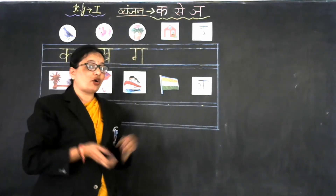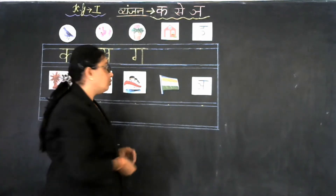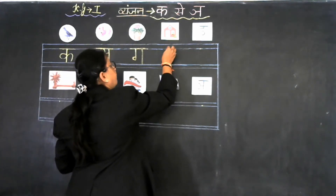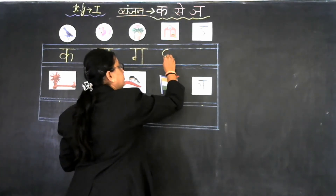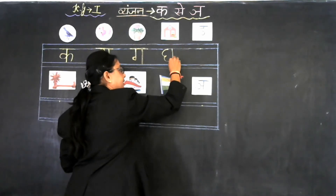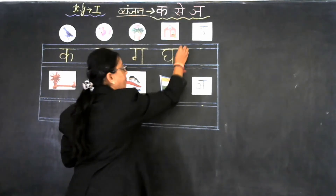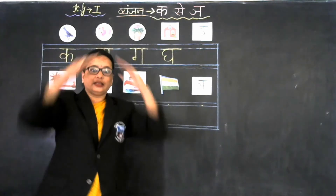And what is the formation of Vyanjan Gha? Now look at the board. First of all we draw reverse 3 like this, go up, and make the standing line like this, and sleeping line on the top like this. Ghar se ghar, ghar se ghadi.